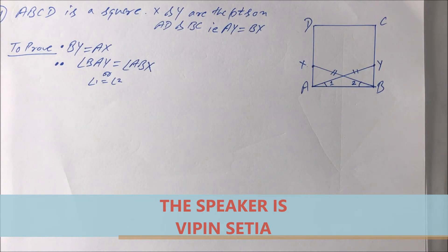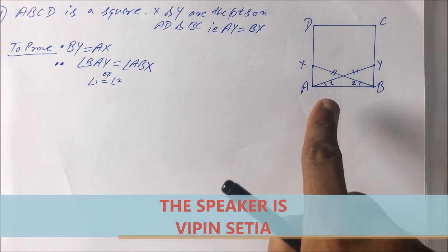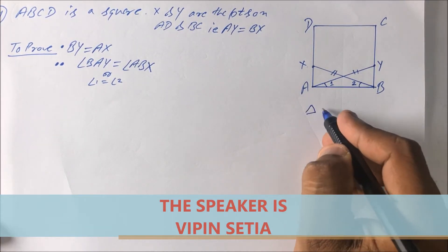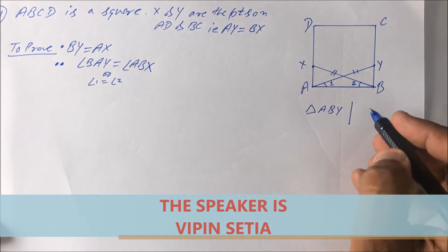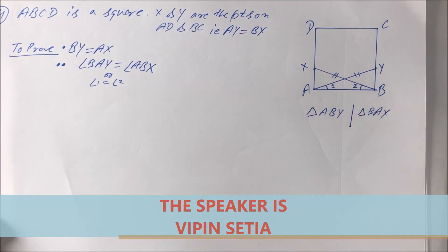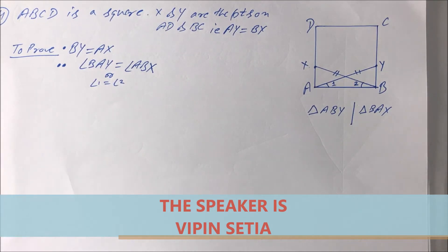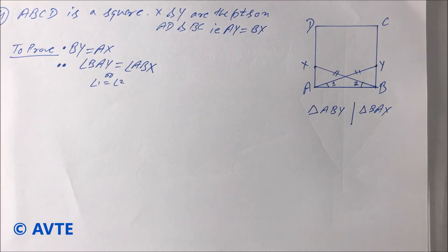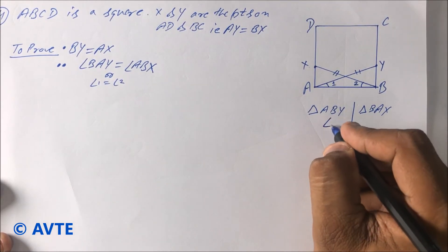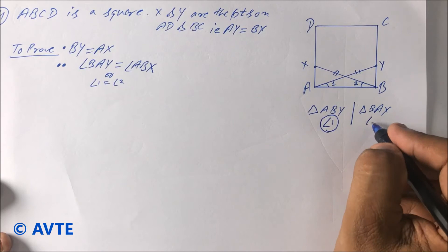So guys, ABCD is a square. Now you tell me, in which triangle is angle 1 coming? In triangle ABY or in triangle BAX? Write down in the comment box and wait for 10 seconds. Okay, angle 1 is coming in this triangle and angle 2 is coming in this triangle.